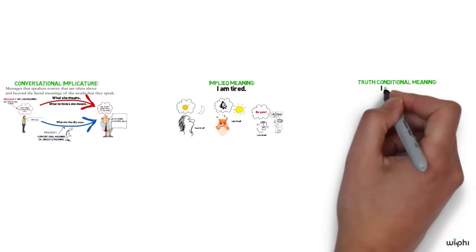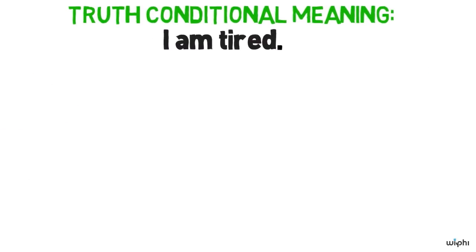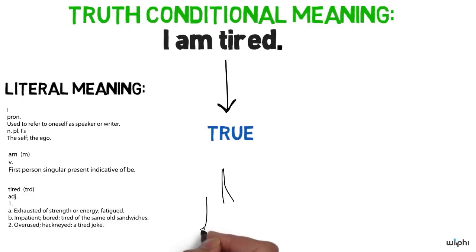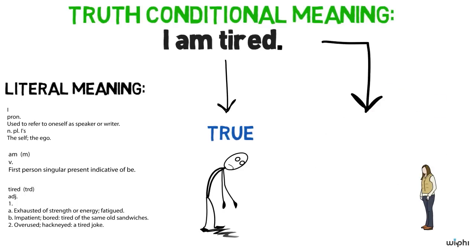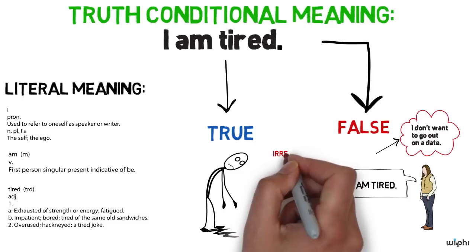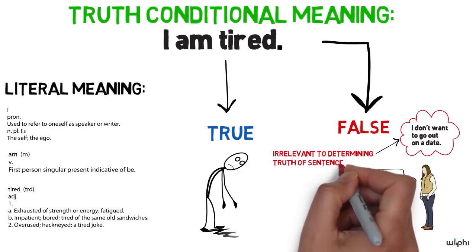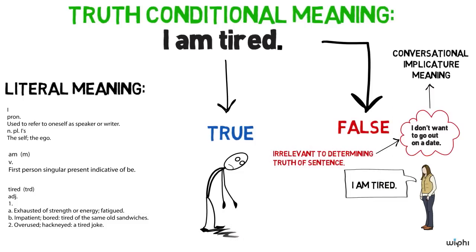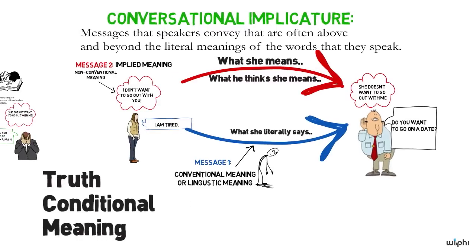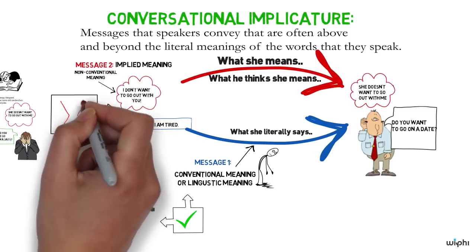Philosophers and linguists often talk about the truth conditional meaning of sentences — the kind of meaning directly part of the literal meaning, used to determine whether a sentence is true or not. For I am tired, this sentence is true if and only if I am actually tired. The truth conditional meaning is not necessarily part of the implied meanings we've discussed. If I say I'm tired to imply I don't want to go on a date, the truth conditions still just depend on whether I'm actually tired. So conversational implicature meaning is not truth conditional. To sum up: we have truth conditional meaning, which is literal and conventional, and non-truth conditional meaning, which is implied and non-conventional.